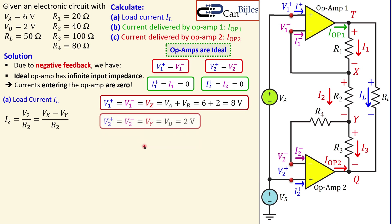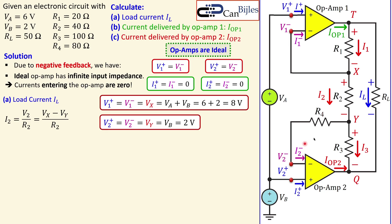Similarly, Vy is directly connected to V2-. There is R4 here, but in the ideal case I2- into op-amp two is zero, so the voltage drop across R4 is also zero — we can consider it a perfect short. That means V2- equals Vy, and since V2- equals V2+ due to negative feedback, Vy equals Vb, which is two volts. We now have Vx = 8V and Vy = 2V.